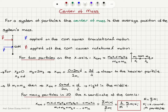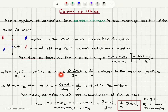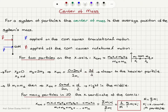As a special case, if x1 is zero (first particle at the origin), x2 equals d, and m2 equals 2*m1 (heavier particle at distance d), then the center of mass is m1*0 plus 2*m1*d divided by the total mass 3*m1, giving 2d/3. So the center of mass is closer to the heavier particle.